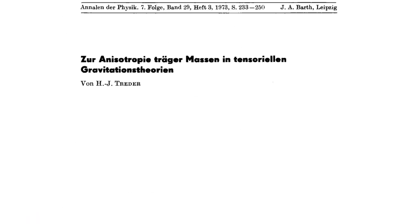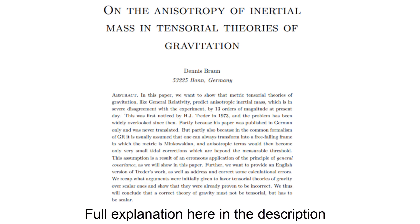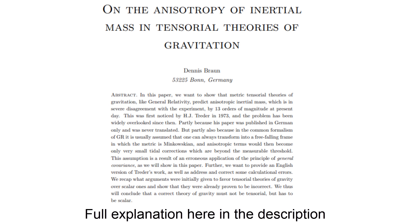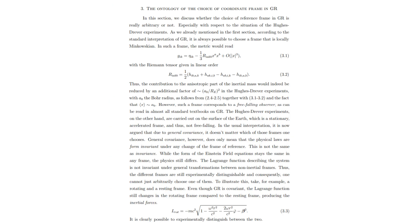Träder further argued that general relativity predicts anisotropic inertial mass in second post-Newtonian order. In tensorial theories of gravitation, inertial mass is proportional to the spatial part of the metric tensor and thus, if the metric is not Minkowskian, it is anisotropic.